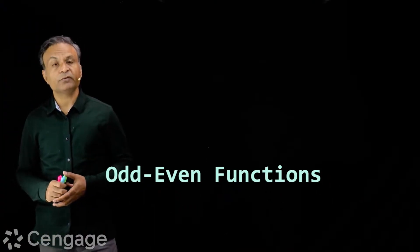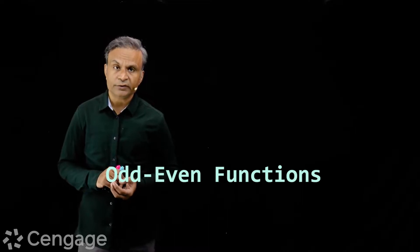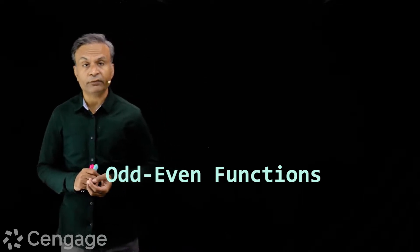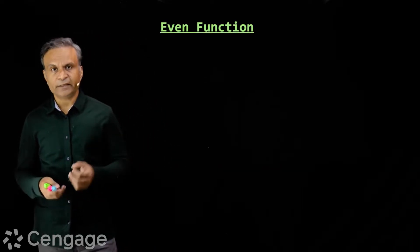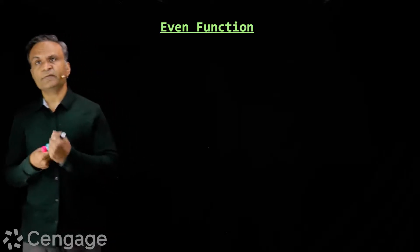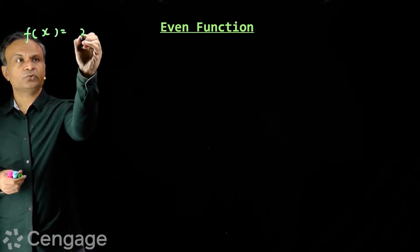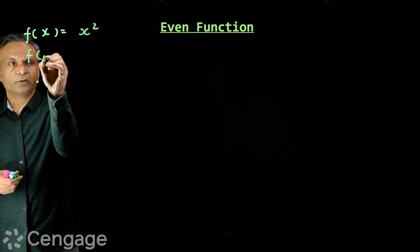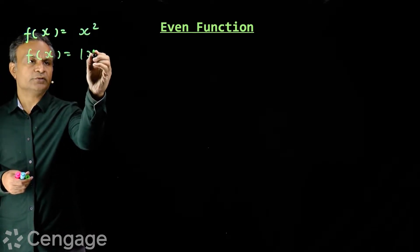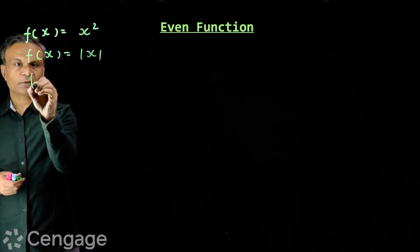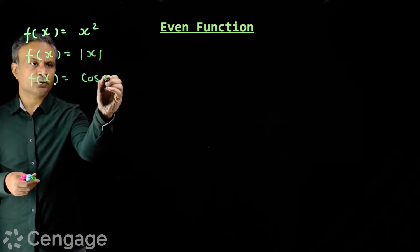Hello students. In this video, we will discuss two special types of functions: odd function and even function. First of all, let us see what is an even function. Consider functions f(x) = x², f(x) = |x|, and f(x) = cos x.